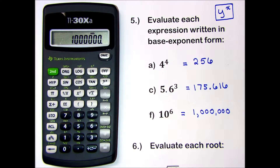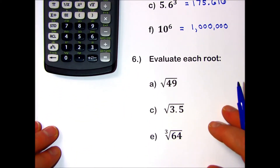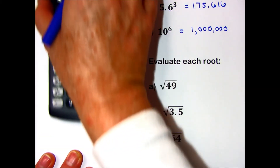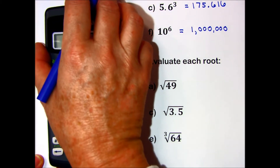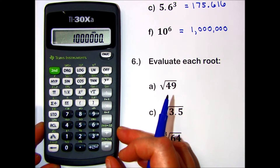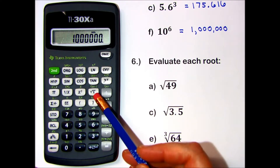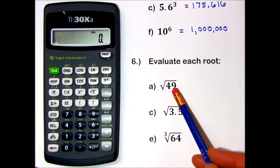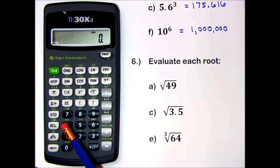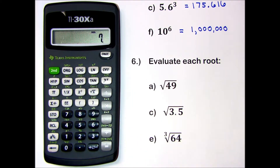Now let's try some roots. Problem number 6 is to evaluate each root. This calculator does have a square root button. We're going to press that after we enter our number. So for the square root of 49, I enter 49 and then press square root, and it gives me my answer: 7.